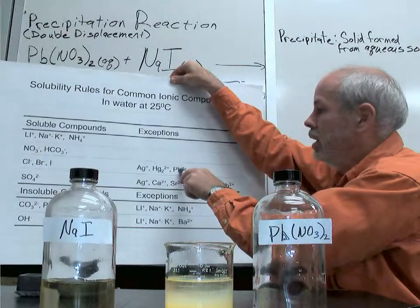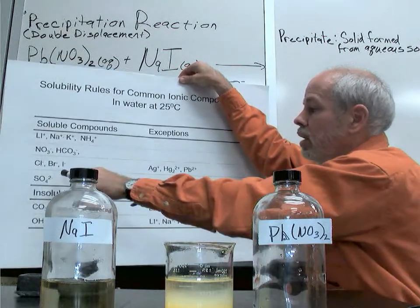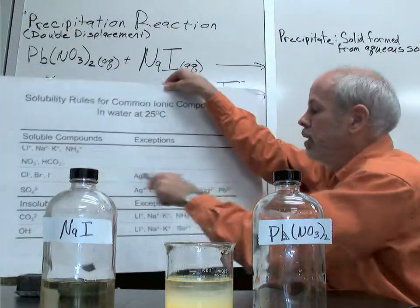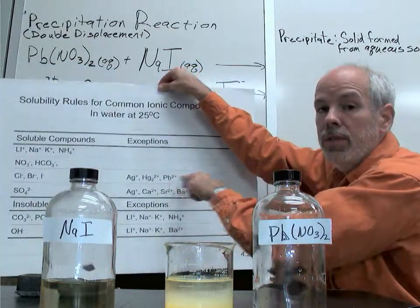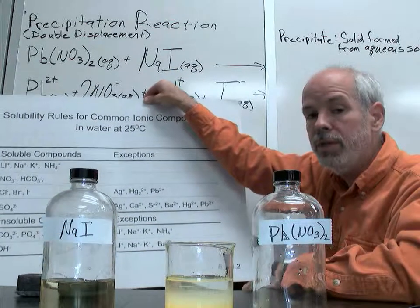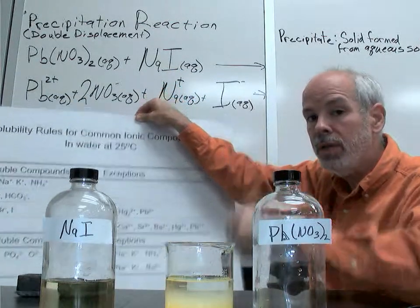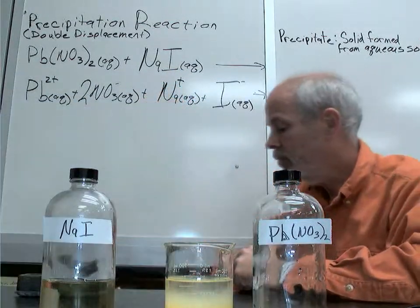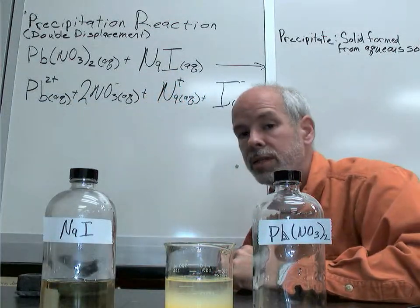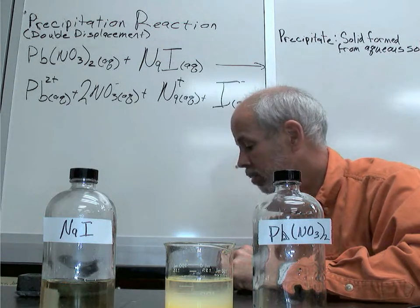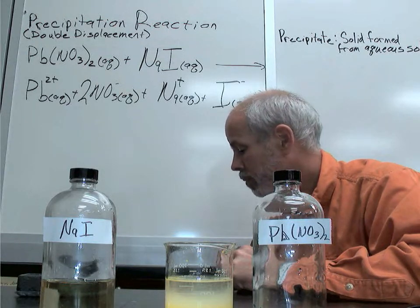However, the iodide ion, when it runs into lead, it'll make a compound that should be soluble, but lead is an exception — it makes it insoluble. They will stick and they will form a solid compound, and that's our precipitate.